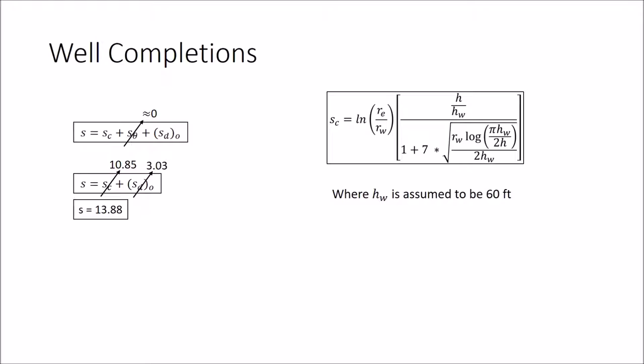In the Excel spreadsheet, the only way to input different well completion data is to provide the skin of said well completion. So for the partial completion, this equation was used to find the skin contribution of the partial completion. 60 feet was used for H sub W in our calculations, meaning that only 60 feet of the total height of the reservoir, which was 80 feet, was used, hence the partial completion name.